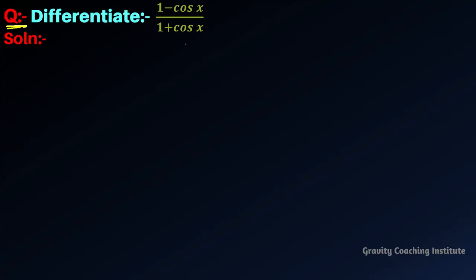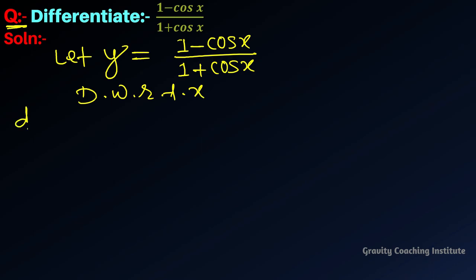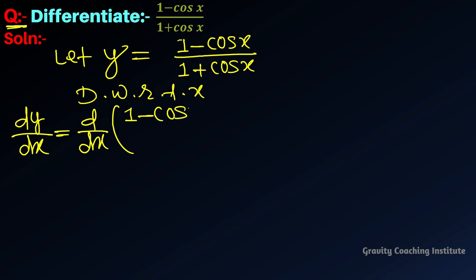Differentiate (1 minus cos x) by (1 plus cos x). Let y equal to 1 minus cos x by 1 plus cos x. Now differentiate with respect to x. So dy upon dx equals the differentiation of 1 minus cos x by 1 plus cos x.